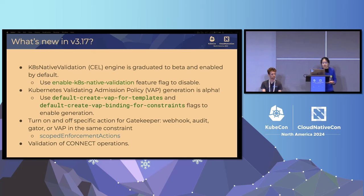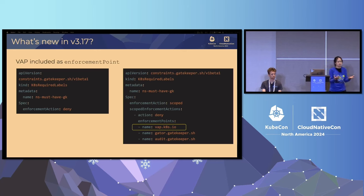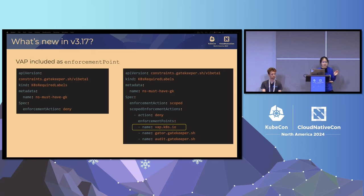We also added validating connect operations, so users can write rules against those particular operations. For example, kubectl exec is an operation that uses the connect operation. Here's an example of how you can use the new in-scoped enforcement point feature. Traditionally you just specify an enforcement action — either deny or warn — that applies for the entire policy. Now you can specify a scoped enforcement action: the action is deny, and you can make sure it's denied for both VAP and Gator, which is our CLI for CI/CD, so you can run the same policy within your CI/CD pipeline and when you actually deploy something on the cluster.